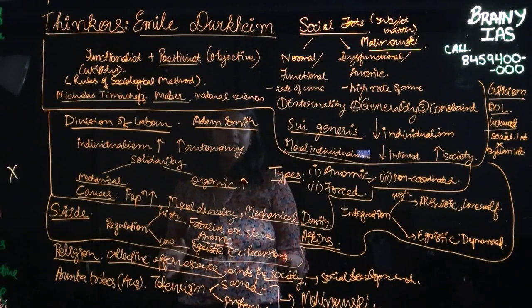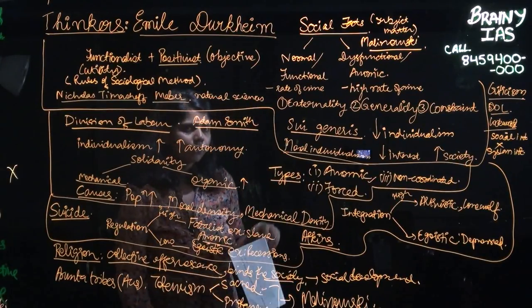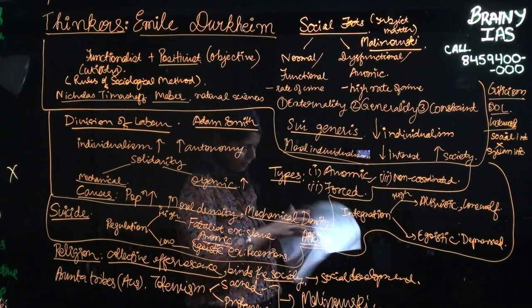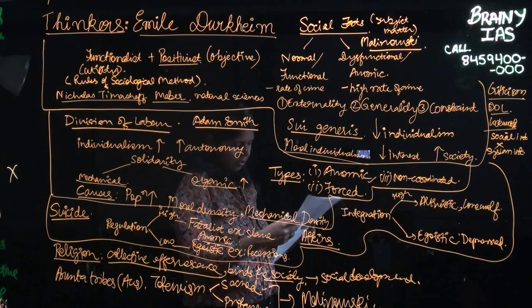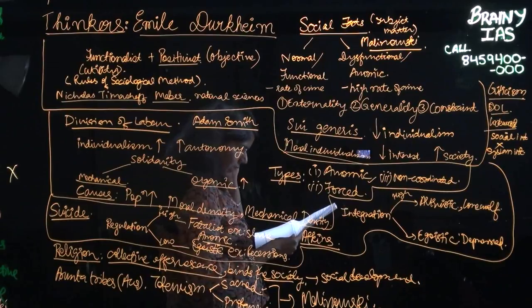So that's basically about Durkheim. Now we take up the question paper for year 2016, sociology paper 1. So there is a question in A to B, 20 marks.